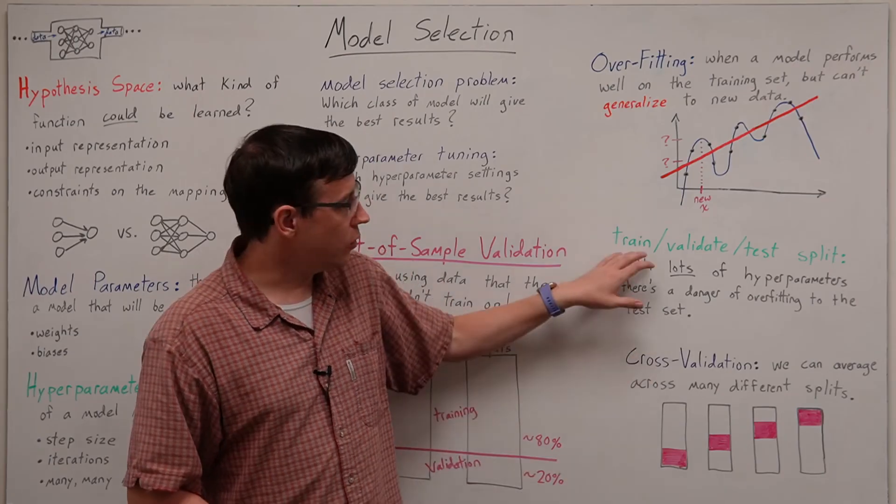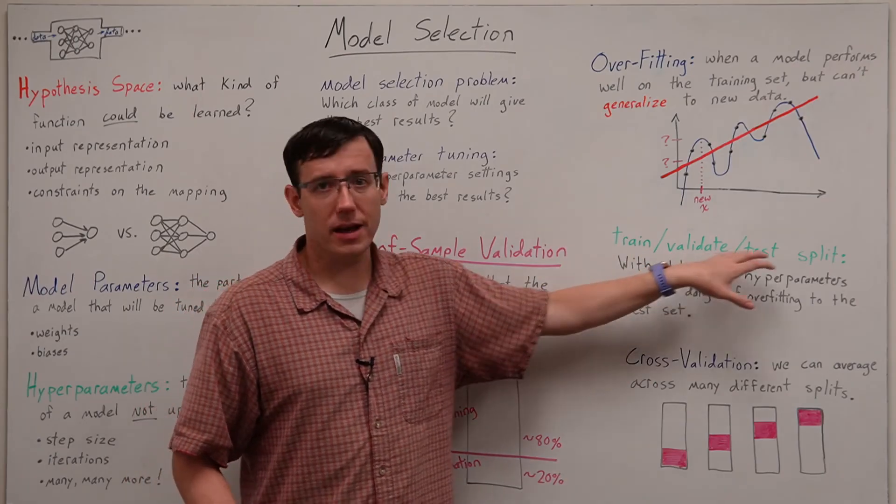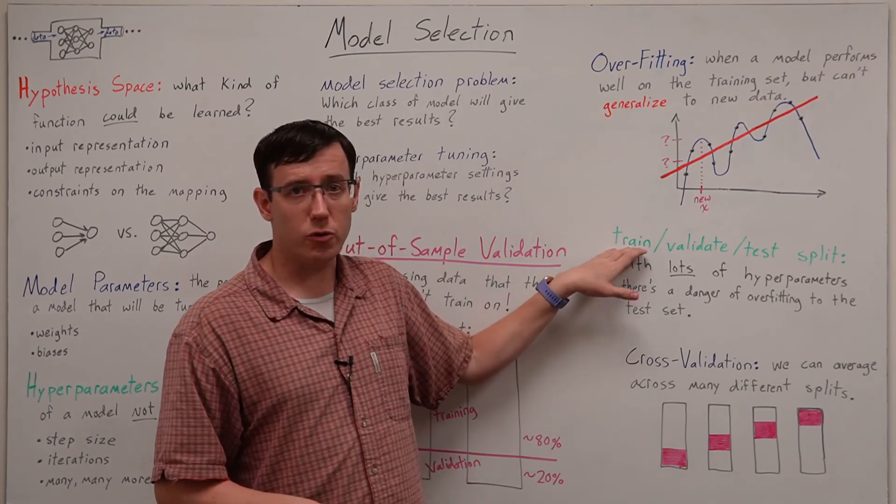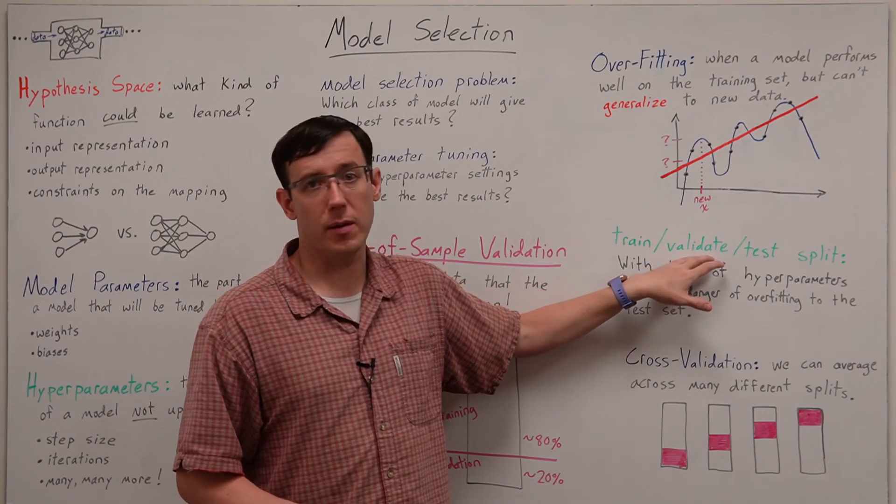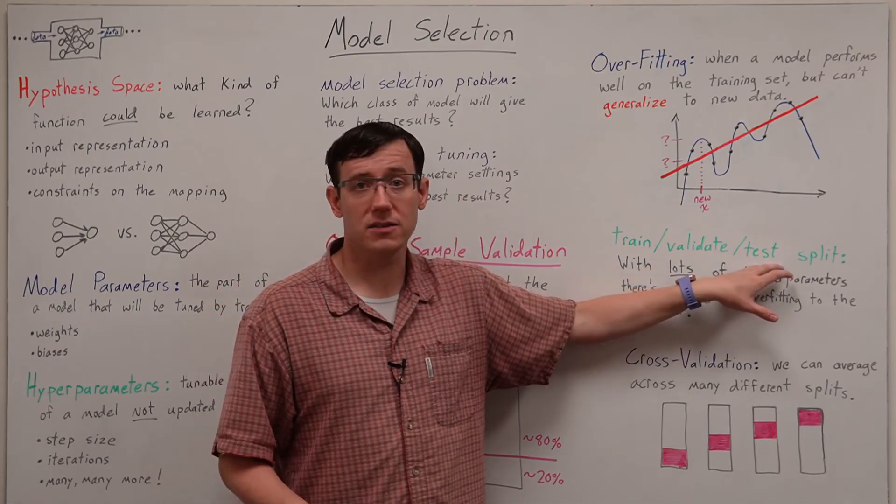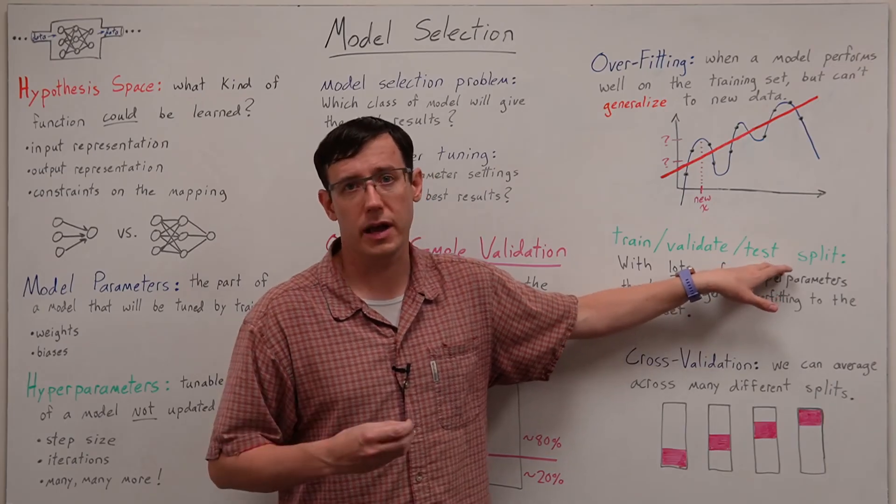Which might lead us to split into train validate and test sets which will allow us to set our parameters based on the training set and our hyperparameters based on the validation set and still have a test set available to make sure that our model generalizes.